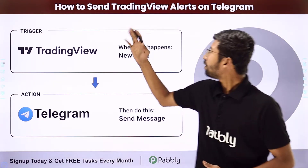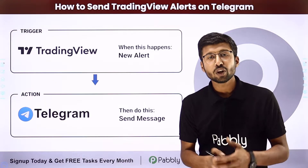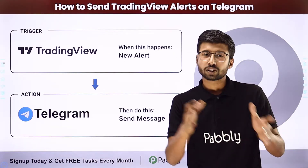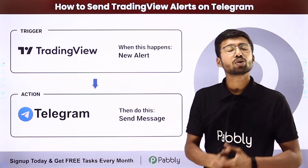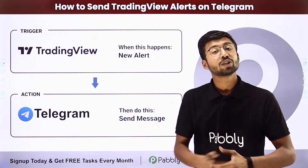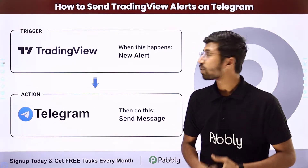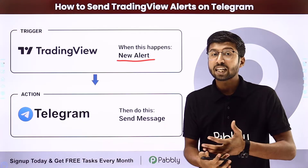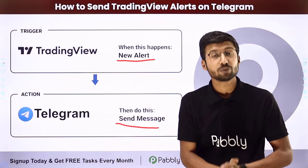In this video, we will learn how to send TradingView alerts on Telegram. Suppose you are using TradingView to get updated alerts on your favorite stocks and indices, and you want to send those alert messages to your Telegram channel or group so that you can update your community on Telegram as well. The trigger of this automation will be getting a new alert message on your TradingView account, and the action will be sending those same alert messages as a new message on your Telegram group or channel.